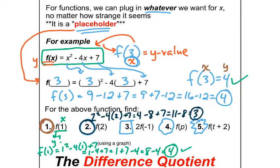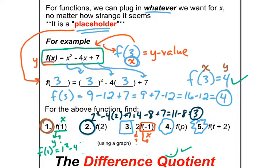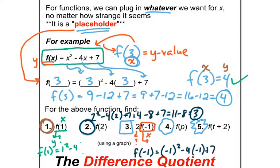Number 3 is interesting because it has that 2 in the front. I still want to plug in x equals negative 1 first. When plugging in a negative, be really careful — use a lot of parentheses. f of negative 1 is (−1) squared minus 4 times (−1) plus 7. Negative 1 times negative 1 is positive 1. And minus 4 times negative 1 is negative 4, so I see a minus minus coming up, plus 7. Minus minus is just a plus, so you really have 1 plus 4 plus 7 equals 12. So f of negative 1 is 12.